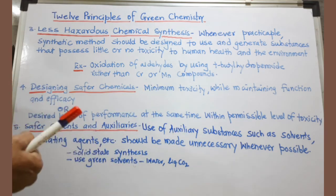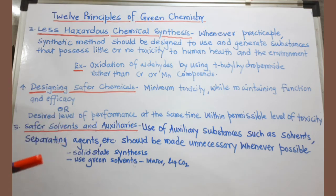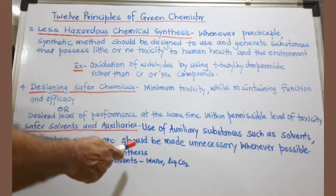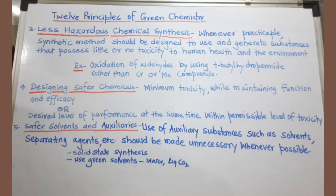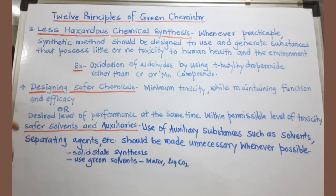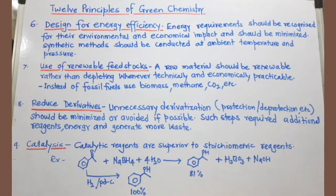The fifth principle is safer solvents and auxiliaries. Auxiliary substances such as solvents or separating agents should be avoided or made unnecessary whenever possible. Instead, you can try solid-state syntheses or use green solvents like water, liquid carbon dioxide, or supercritical carbon dioxide. You should also avoid the use of organic solvents that are carcinogenic.